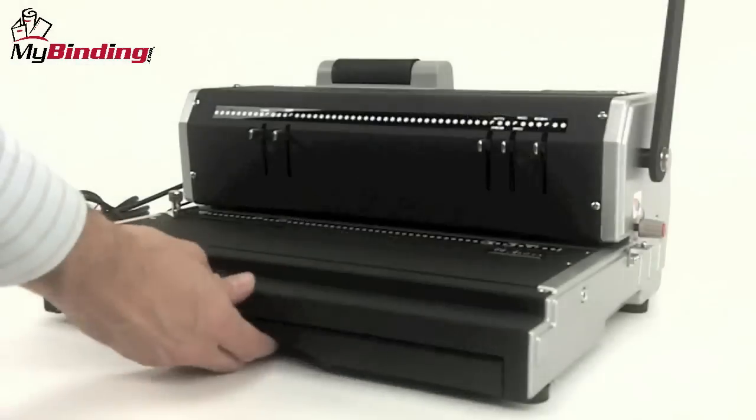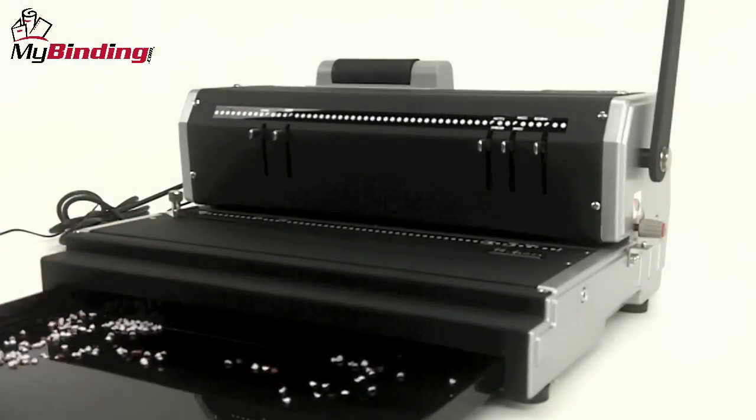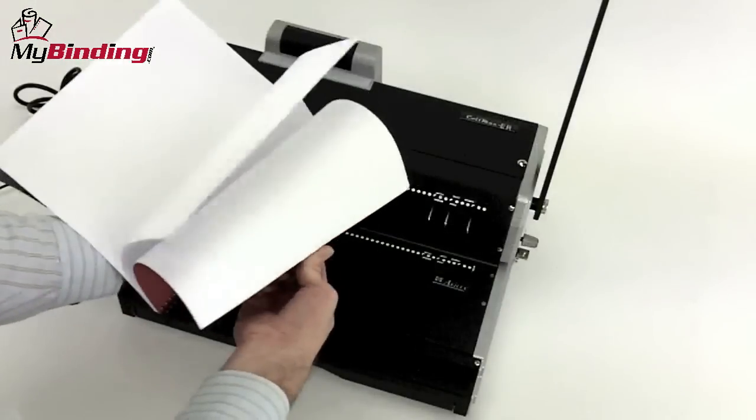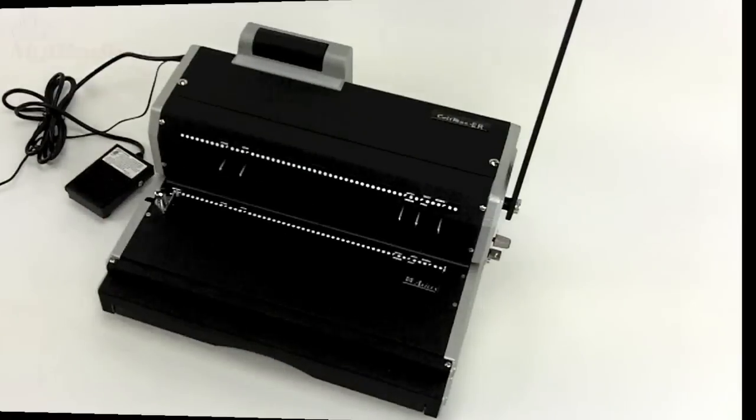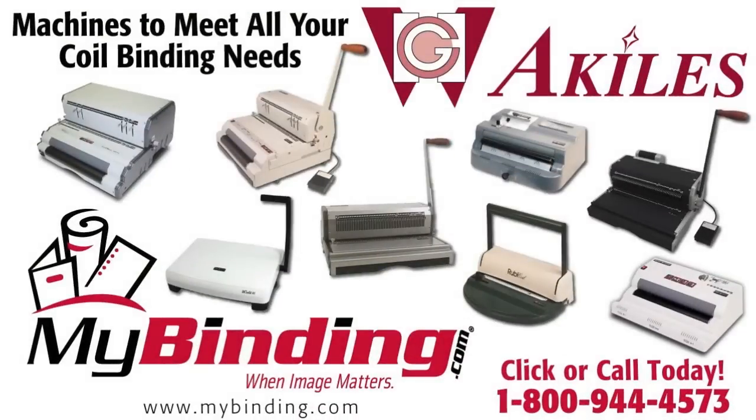All the punched chips fall into the chip tray that's below and accessed from the front. And that's it. That's the CoilMac ER by Achilles. For more demos, reviews, and how-to's on this product and many more, check out MyBinding.com. Thank you.